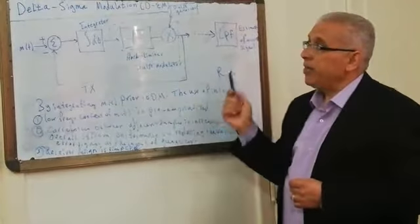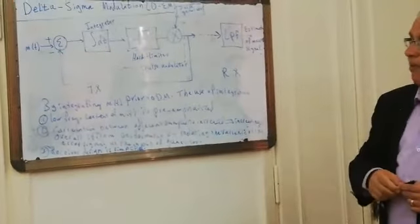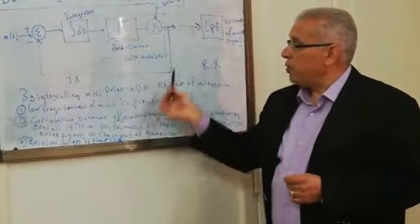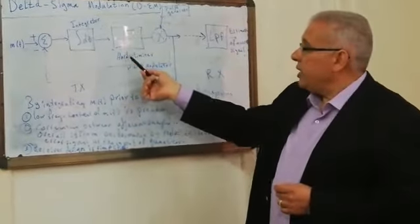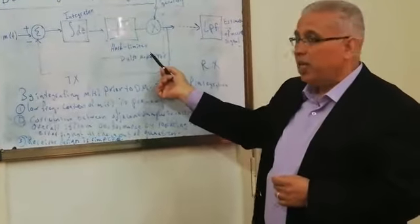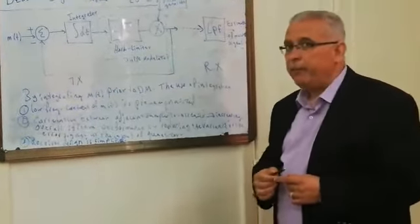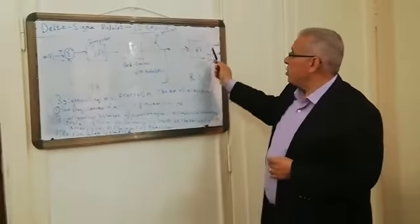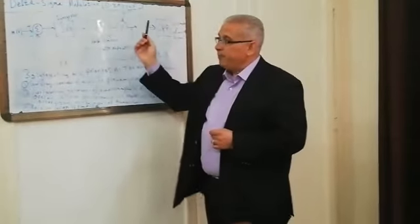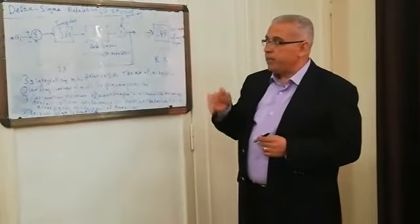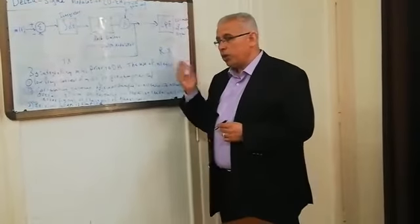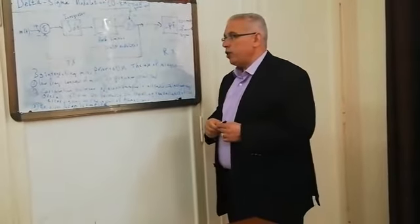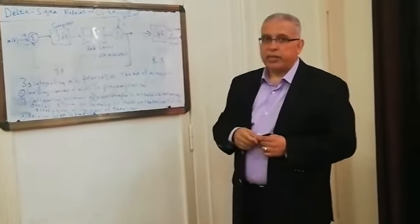So this is the main function of the delta sigma modulator, which overcomes all the problems we faced previously. We simply added the integrator prior to the delta modulator. Instead of a voltage comparator, we use a device called a hard limiter or zero-crossing detector, where the inverting input is tied to zero. By this technique, we overcome all the problems mentioned previously: quantization error, which includes slope overload distortion and granular noise, and DC voltage components. Thank you for following me. See you in the next lecture. Bye.